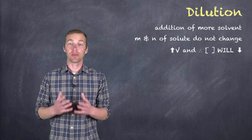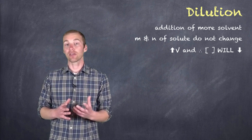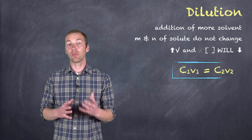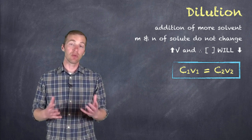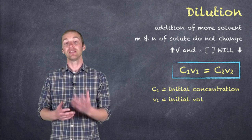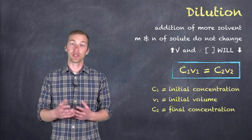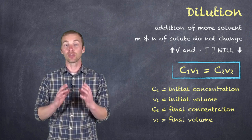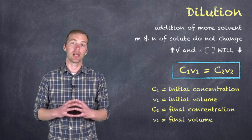So there's a relationship that we have to know that takes these two factors into account. And we refer to this as the dilution equation, that is C1V1 equals C2V2. And really what this refers to is that the initial concentration times the initial volume is equal to the final concentration times the final volume. And this is because the number of moles of solute doesn't change in a dilution.